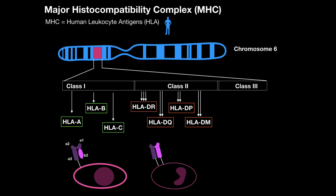MHC class 2 has alpha chains with two domains and beta chains with two domains. Alpha 1 and beta 1 are going to be the binding site for the peptide, and alpha 2 and beta 2 are both going to be anchored to the cell membrane. Class 3, however, has a quite different role than class 1 and class 2 — it's just that the genes that code for it are among this region, which is why we call it class 3. It codes for proteins of the complement system and also some cytokines like tumor necrosis factor alpha, but mainly complement proteins — and that's why we sometimes call it complement MHC.